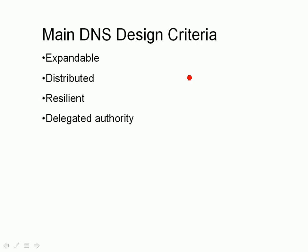The main design criteria when DNS was designed was: it needed to be expandable because everything was increasing, so you need to be able to have more and more computers. It needed to be distributed, which means it wasn't located on a single computer but could be located on lots of different computers. It needed to be resilient, which means you had to have a copy so if one server was down you still had the information. And it needed to have delegated authority, meaning you didn't have one administrator — you had to be able to delegate authority to administer the IP addresses.